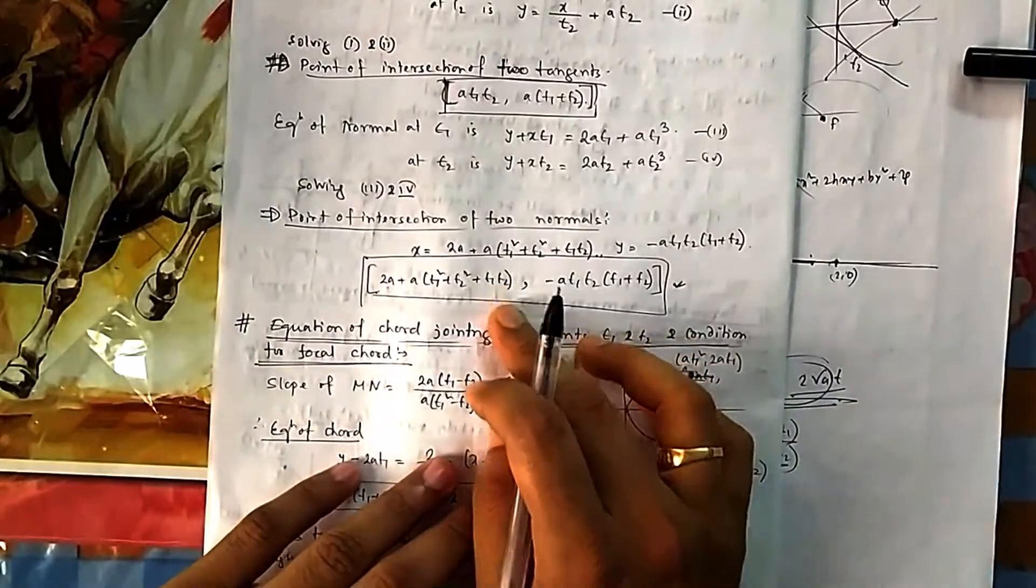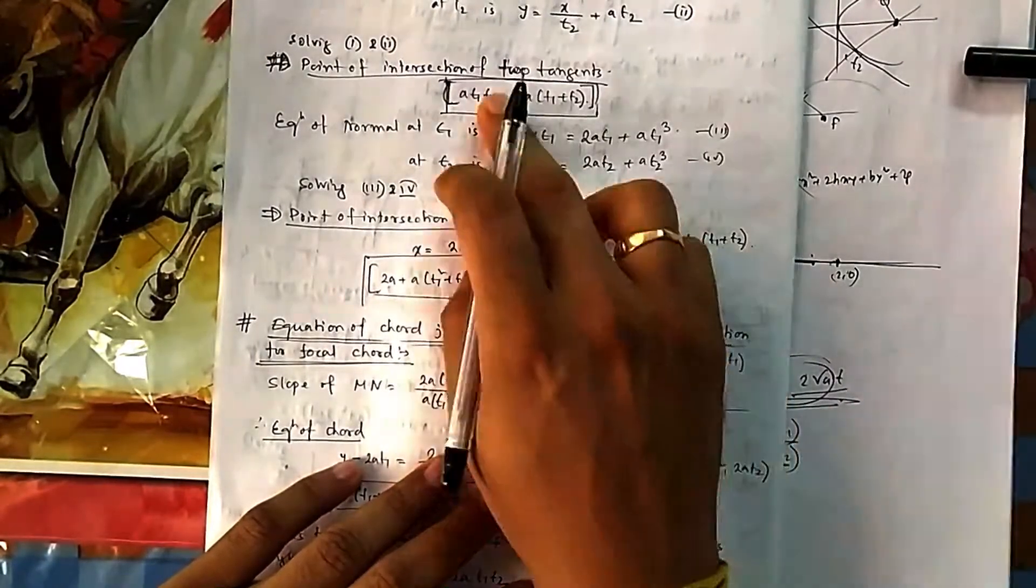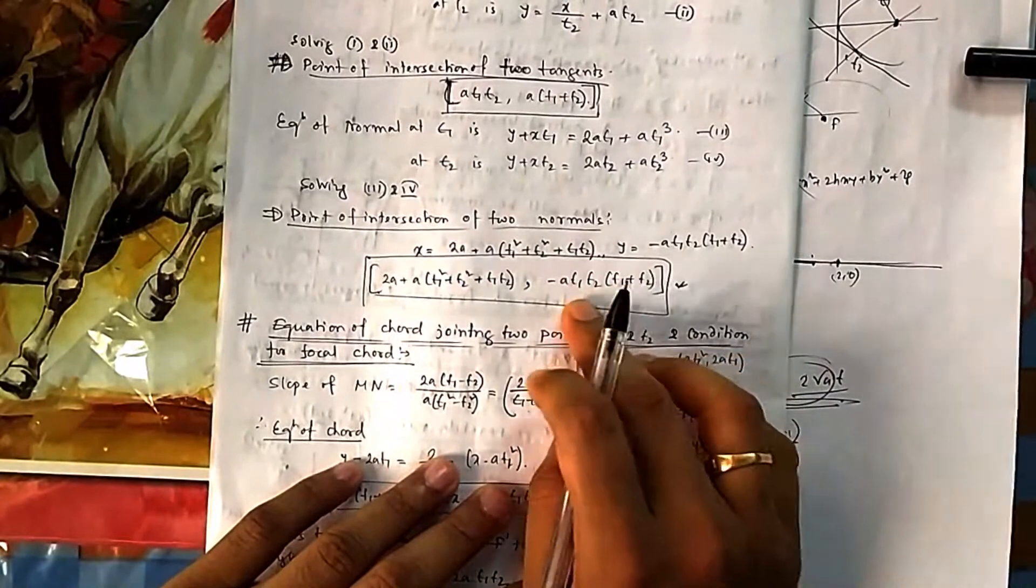But if you can remember then it's okay, it is also easy to remember. In the case of normal everything comes here: t1 t2, t1 plus t2, everything comes here minus.